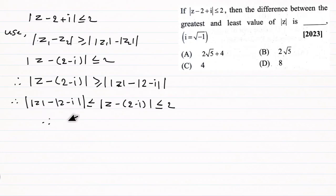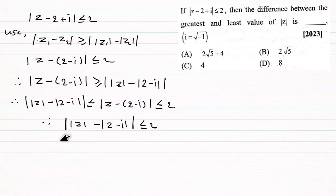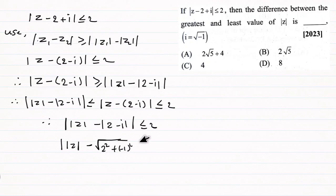Now we compute modulus of (2 minus i): it equals the square root of (2 squared plus (-1) squared) which equals the square root of 5. So modulus of z minus root 5 is less than or equal to 2.